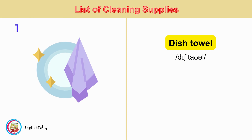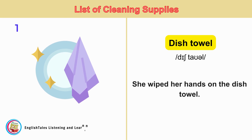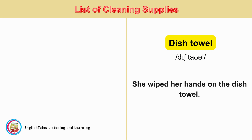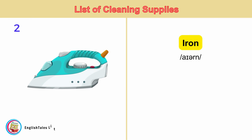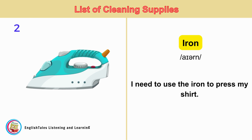Dish Towel. She wiped her hands on the dish towel. Dish Towel. Iron. I need to use the iron to press my shirt.